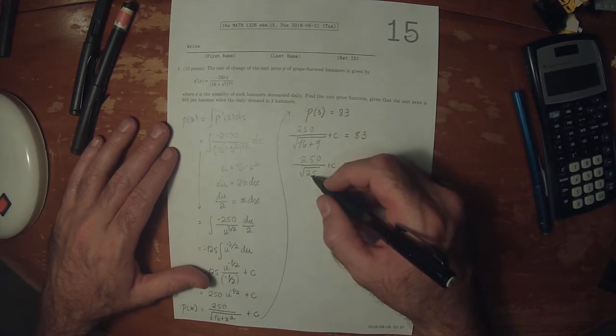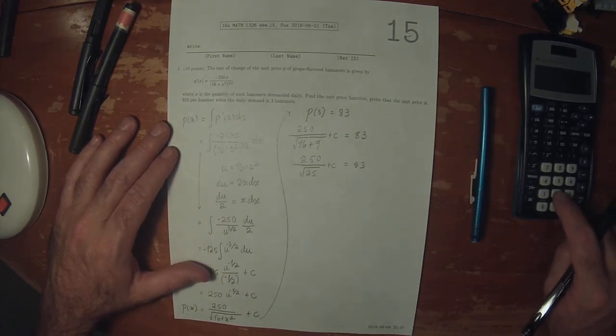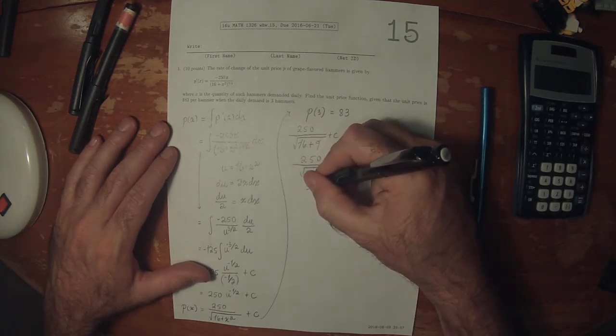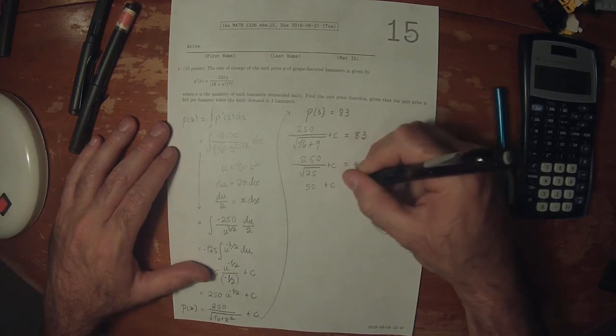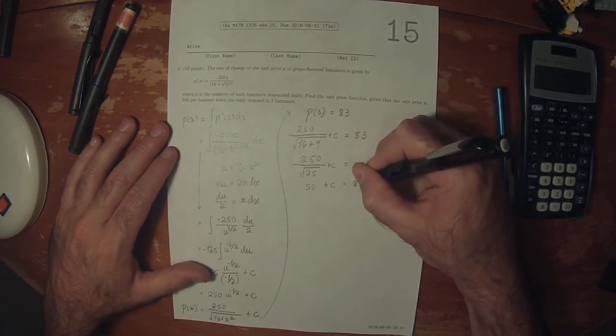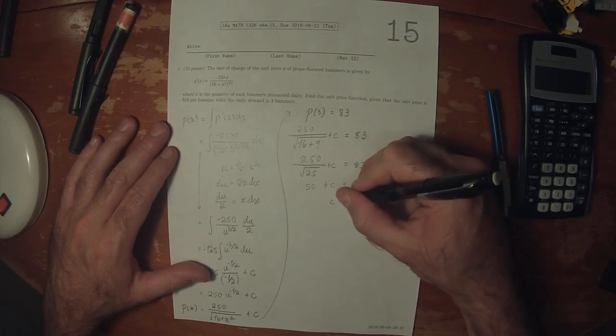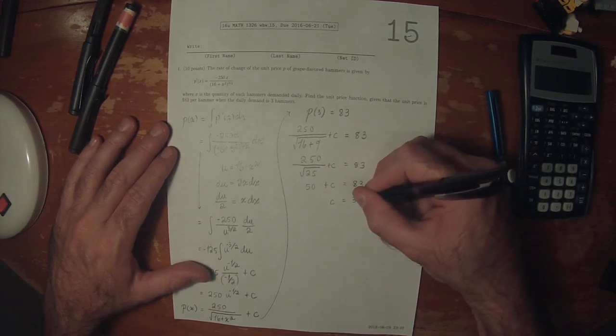The square root of 25 is 5. 250 divided by 5 is 50. So 50 plus c is 83, so c is 33.